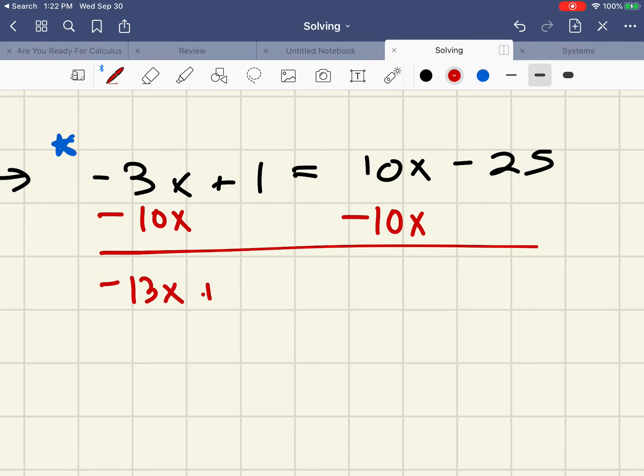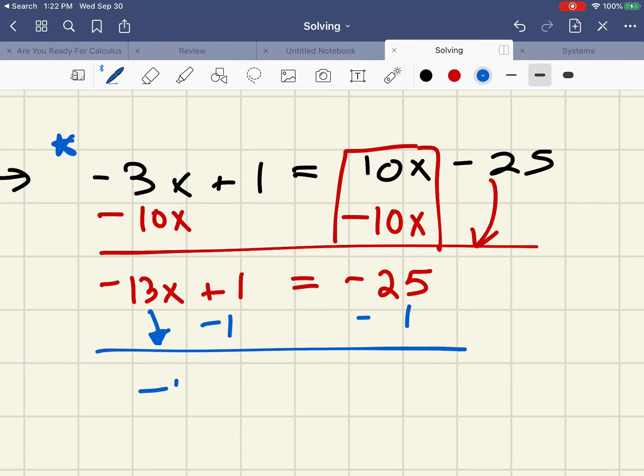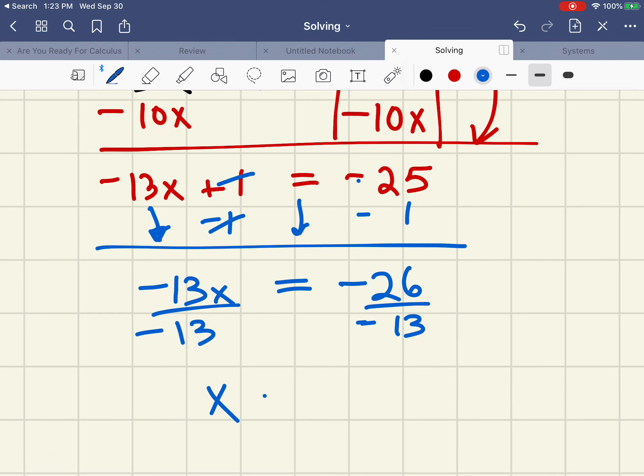That gives me negative 13x plus 1 equals, the 10x's cancel, drop down the negative 25. Now I'm trying to get this 1 away from the x, so I will subtract 1 from both sides. Drop down the negative 13x, the 1's cancel, drop down the equals, negative 25 minus 1 is negative 26. This time I'm dividing by negative 13. I still get x and I still get 2, x equals 2.